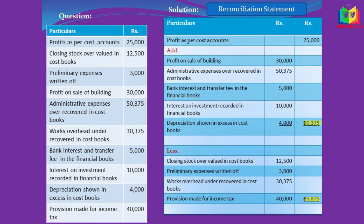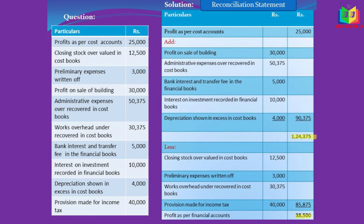Now we total the items to add: 30,000 + 50,375 + 5,000 + 10,000 + 4,000 = 90,375. The items in the less column: 12,500 + 3,000 + 30,375 + 40,000 = 85,875. Adding the profit as per cost account (25,000) with 90,375 gives 1,24,375. Subtracting 85,875 gives 38,500, which is the profit as per financial accounts.